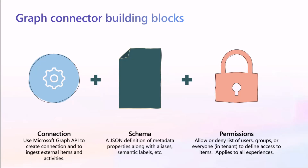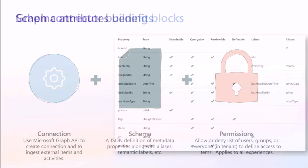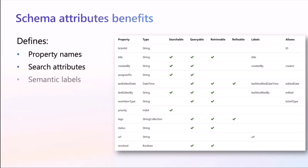The building blocks for creating Graph Connectors are really simple — part of the demystification. It's really three endpoints: one to create the connection, one to create the schema, and one to manage permissions, which is part of what's known as the external item. You define what the fields are inside those systems — they may not be the same as what's defined inside M365 — so there is a mapping you create, and that's what the schema does. Beyond that, you have control over the experience: you can define what you want to be searchable, refinable, and returnable. So you can have fields that no one can search on, but when they query on something, it can return that information — giving you a tailored experience for exactly what your audience needs.